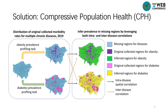The key insight of CPH is that the missing entries of prevalence rates for the current year could be recovered by leveraging both intra-disease spatial correlations as well as inter-disease correlations, as shown in the picture. For intra-disease spatial correlations, a number of studies have highlighted the role of neighborhood effects on health — that is, nearby regions are more similar in the prevalence of certain diseases than distant ones. For inter-disease correlations, commonly defined as the co-presence of two or more diseases, statistics for different types of diseases may also correlate with each other.